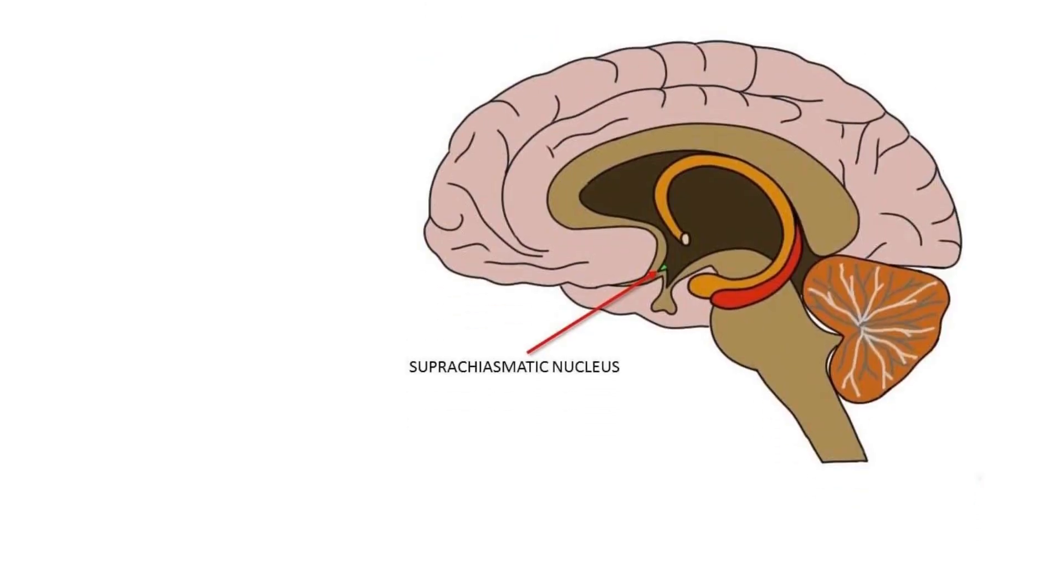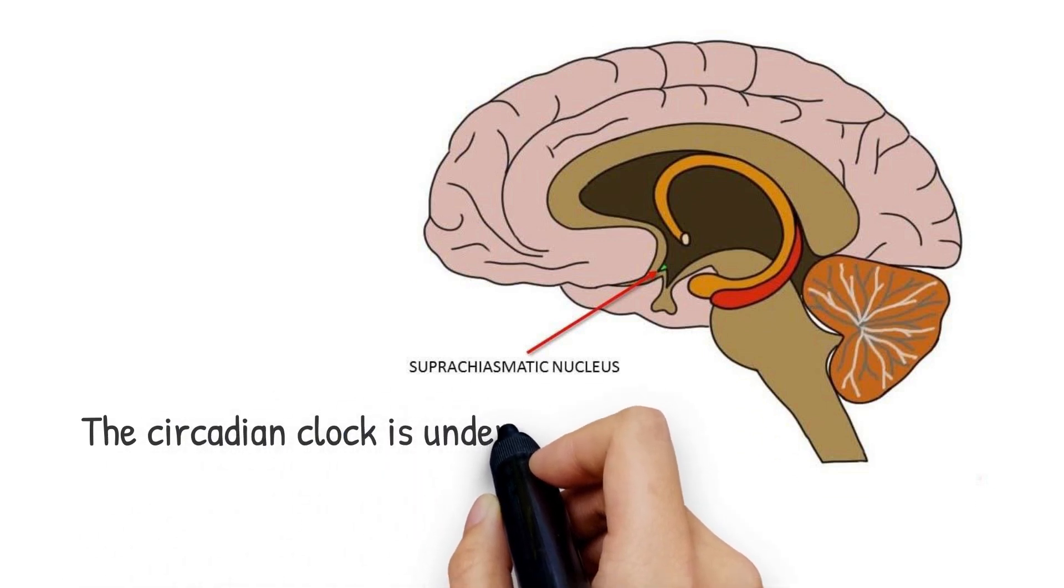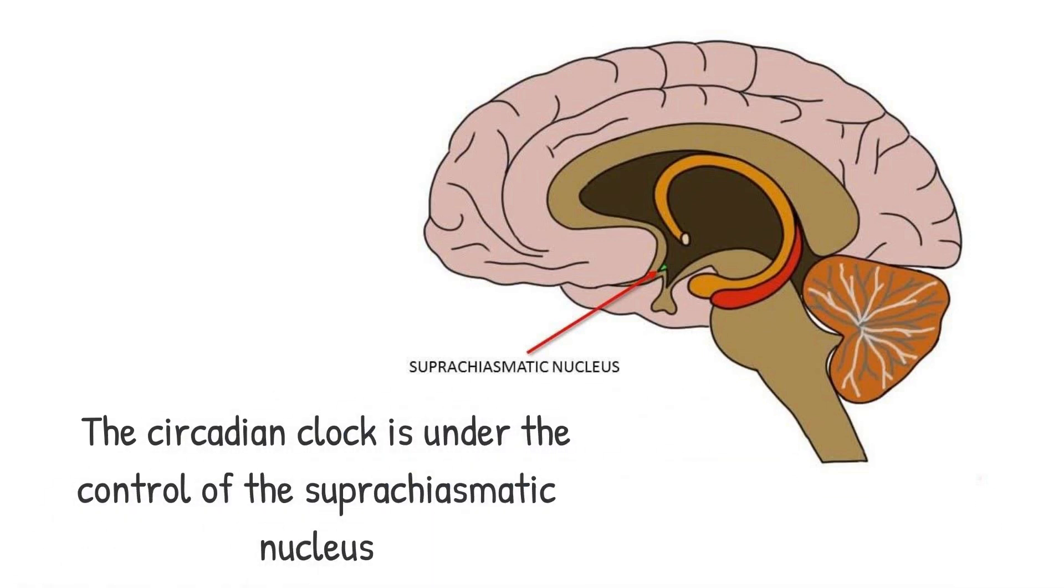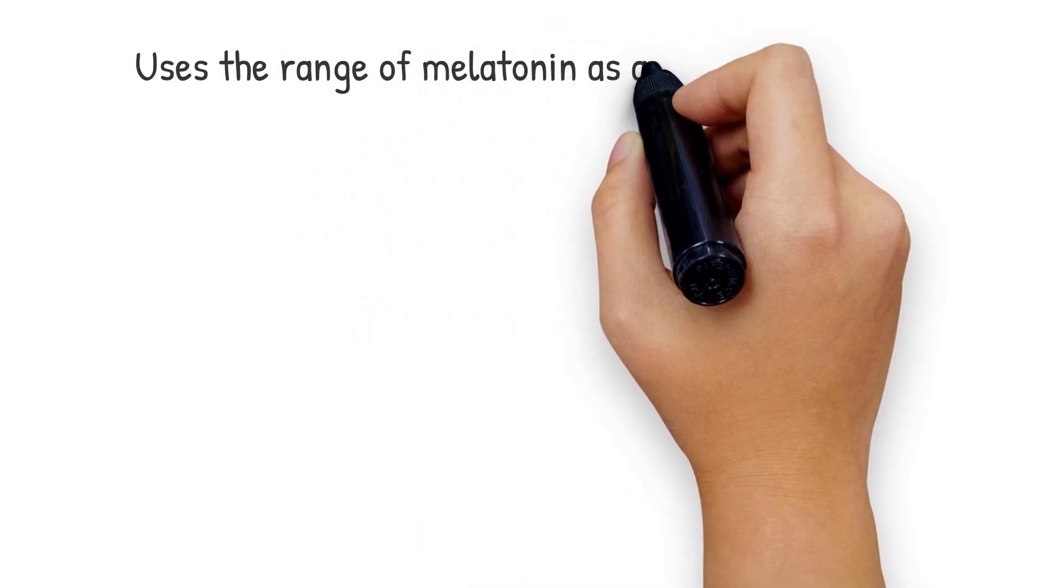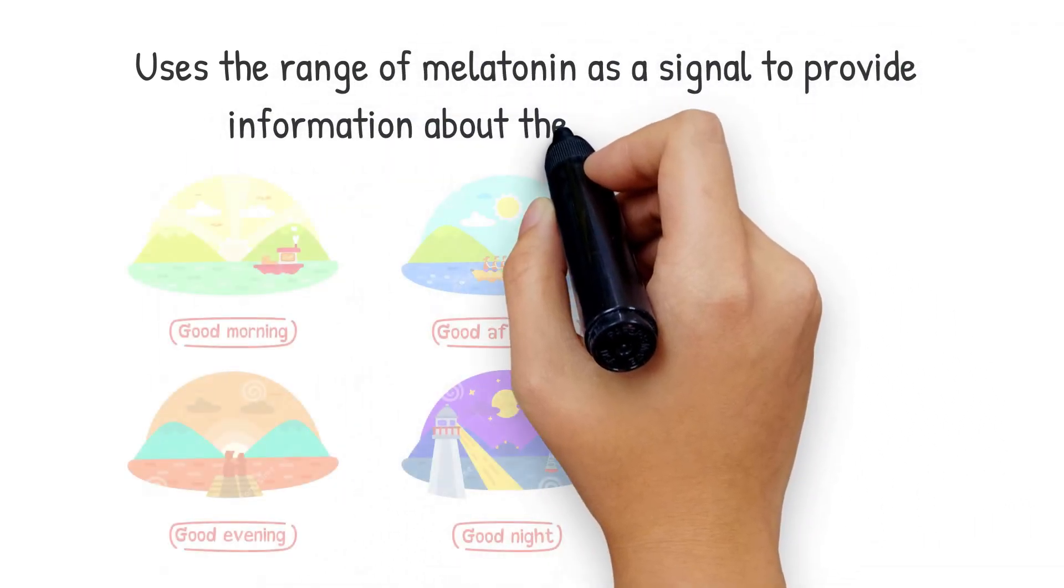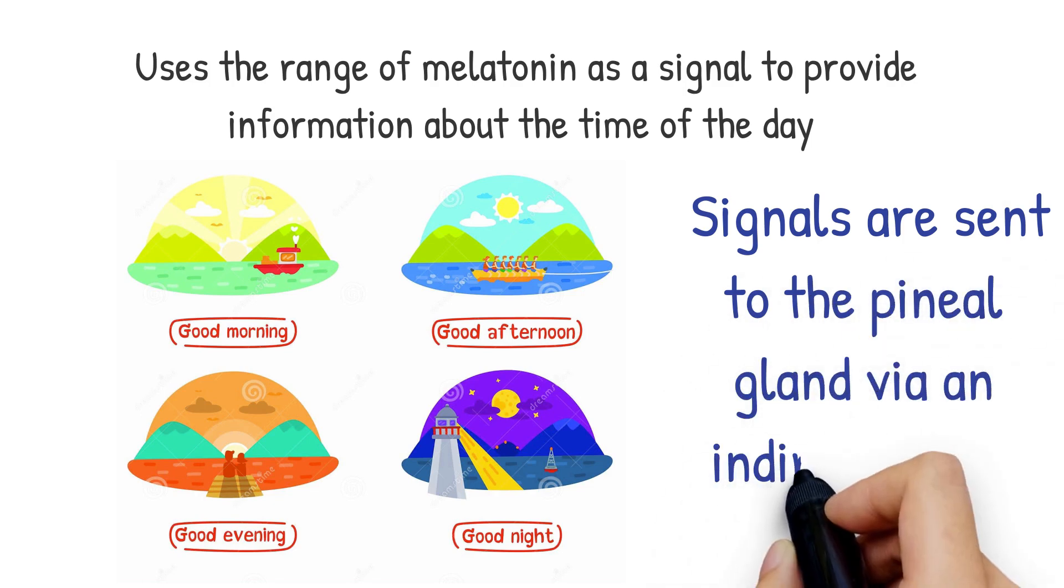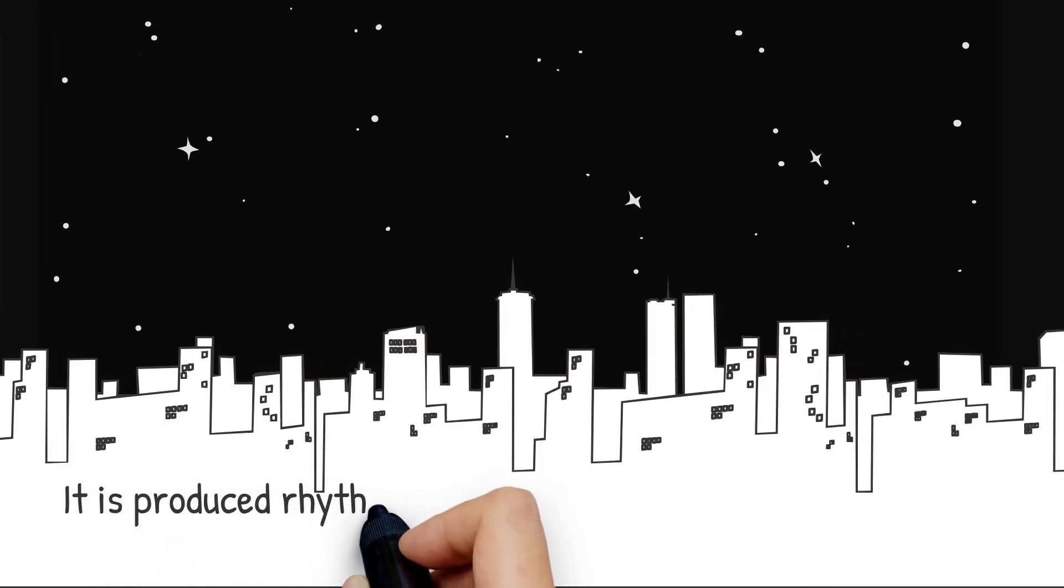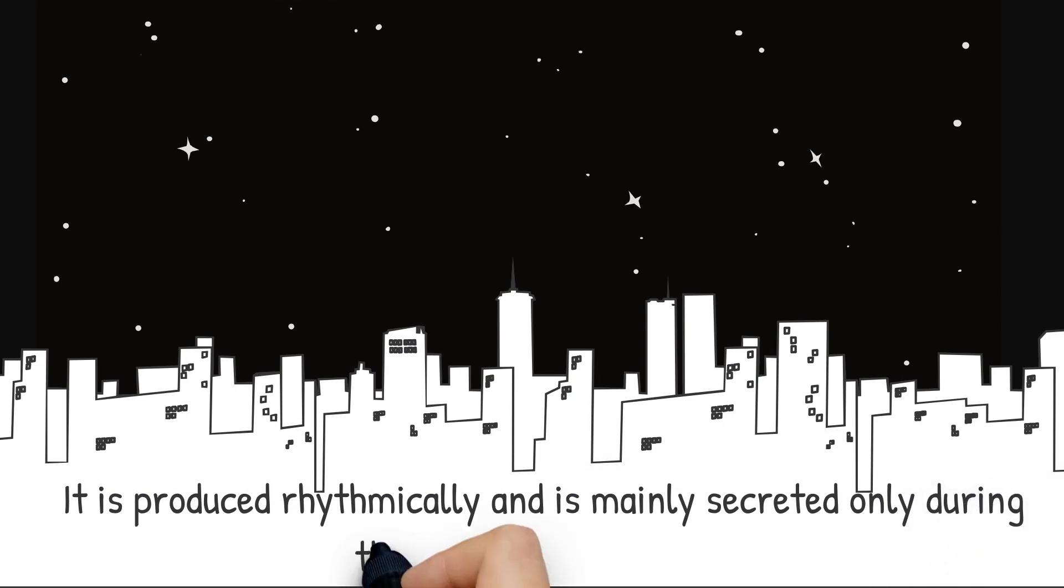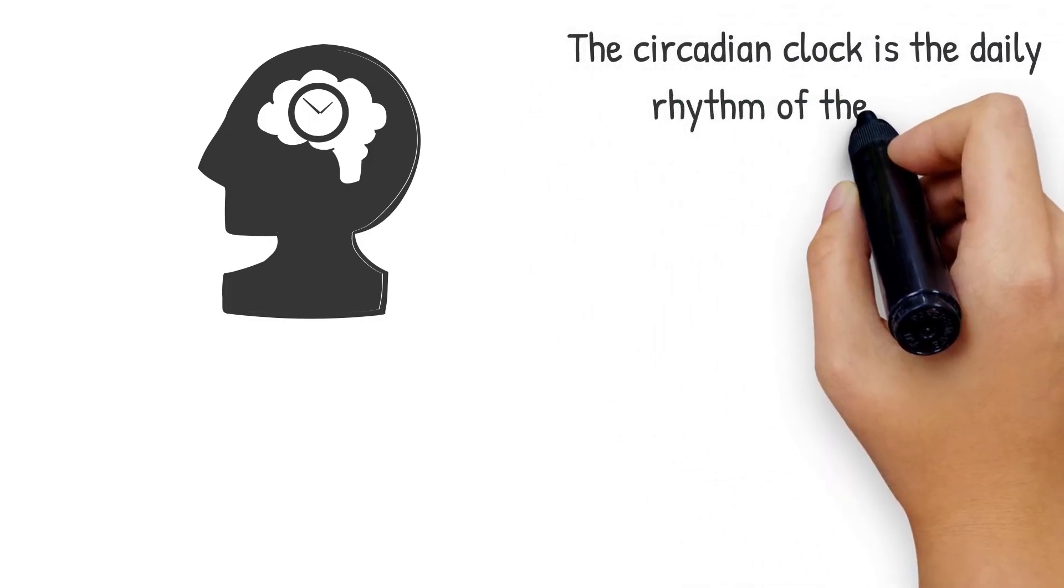When we look deeper, the circadian clock is under the control of the suprachiasmatic nucleus and it uses the range of melatonin as a signal to provide information about the time of the day. These signals are sent to the pineal gland via the indirect route. It is produced rhythmically and is mainly secreted only during the dark phase of a day. The circadian clock is the daily rhythm of the body.